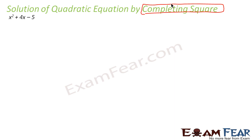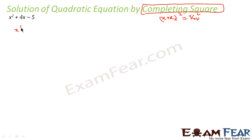Let's try this example: x² + 4x - 5 = 0. What we try to do is find the equation in the form (x - k)² = k₂². Looking at x² + 4x, I can write this as x² + 2·2·x.